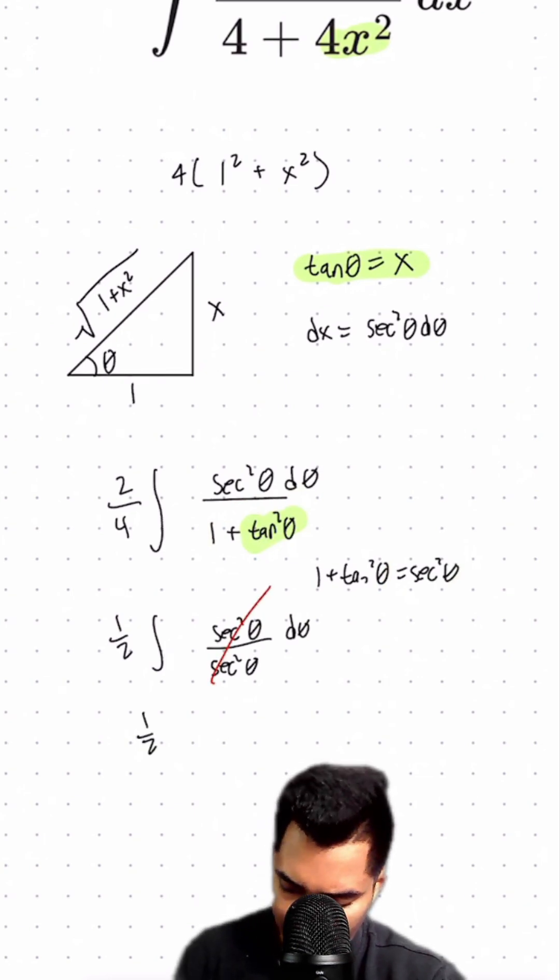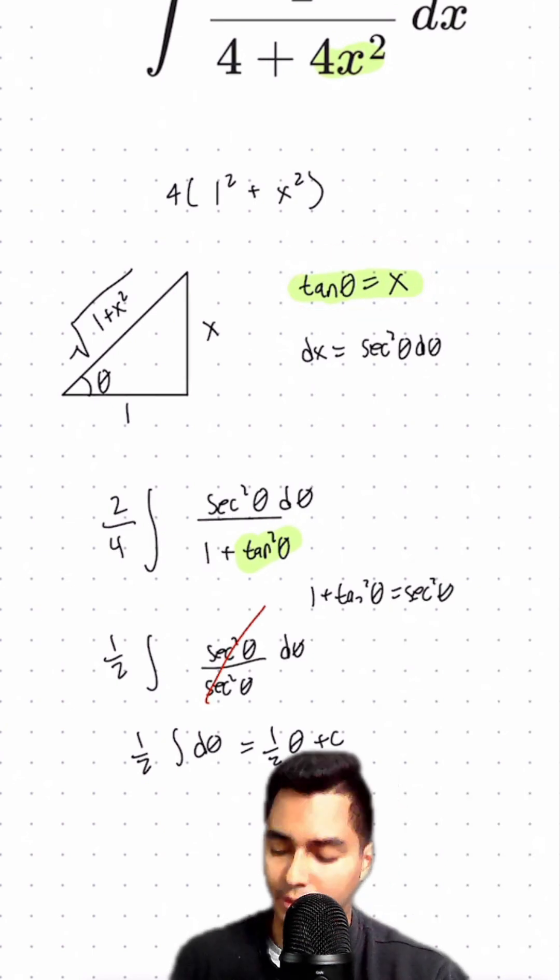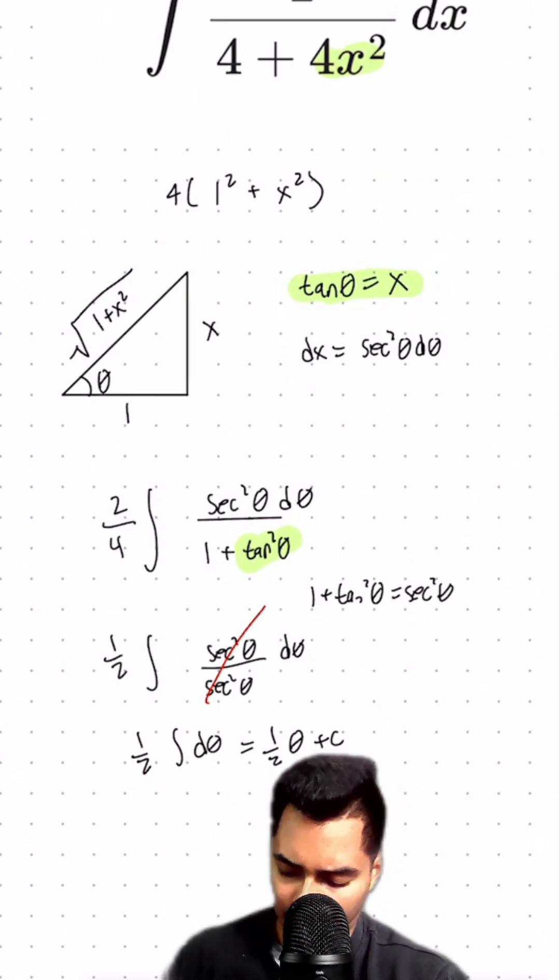So we have one-half times the integral of d theta, which evaluates to one-half theta plus c. To get theta in terms of x, we take the inverse tangent: theta equals inverse tan of x.